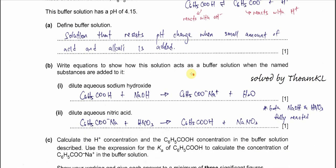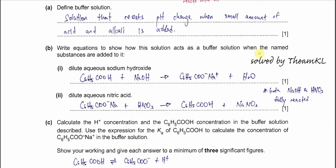Now part B. Write equations to show how these solutions act as a buffer solution when the named substances are added. Part 1: dilute aqueous sodium hydroxide. First we need to make sure the buffer species are used in this equation, means the acids and the salt. When we add hydroxide, the benzoic acid will react, and if this is a neutralization, it will form sodium benzoate and water.